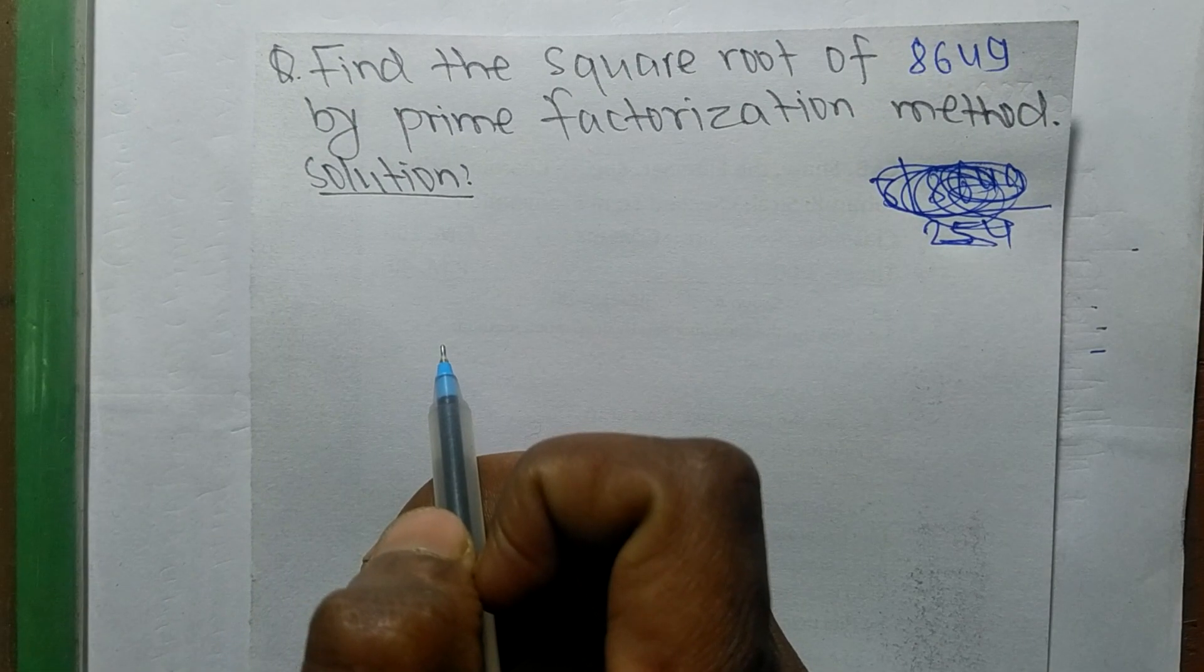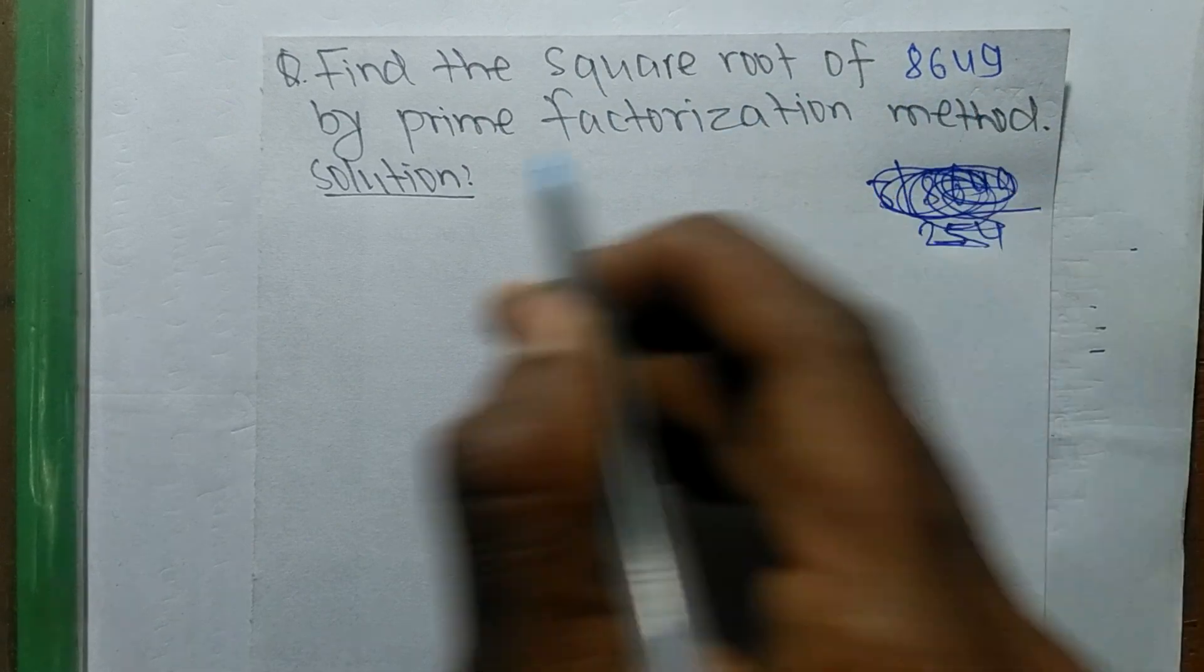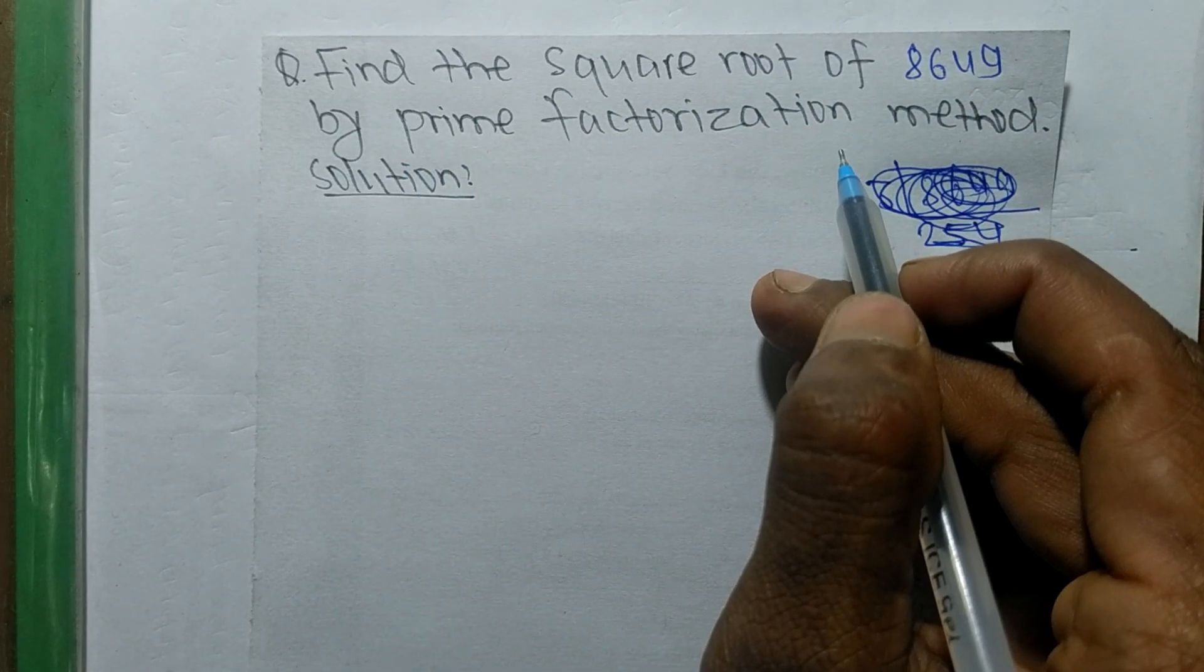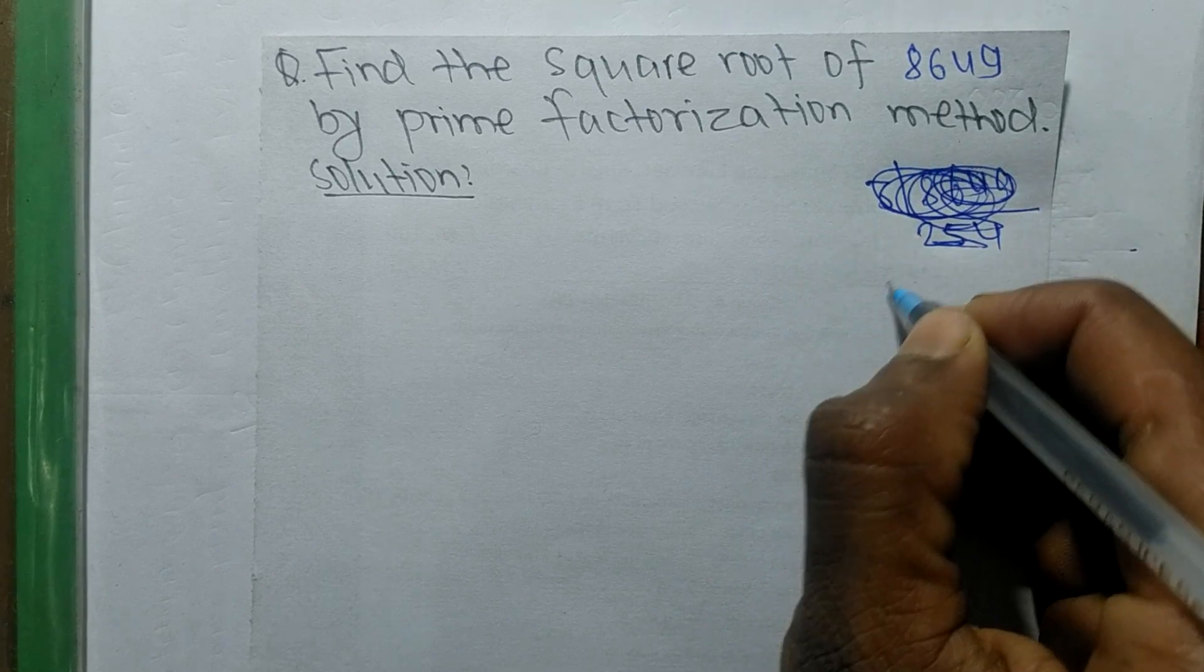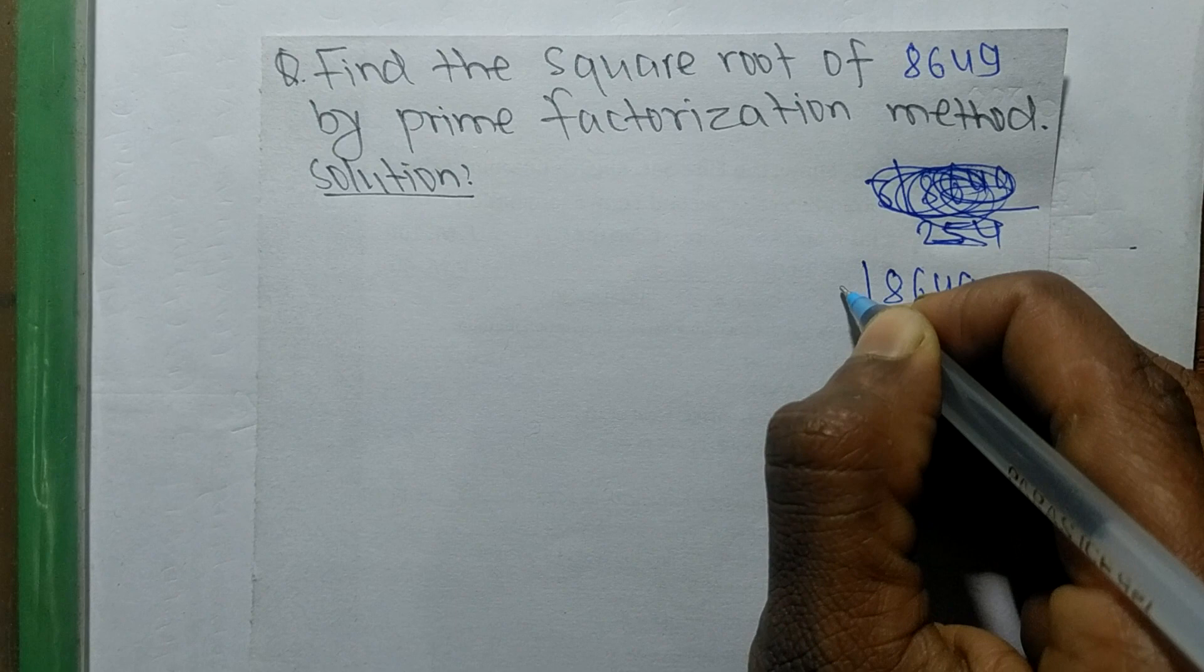So today in this video we shall learn to find the square root of 8649 by prime factorization method. First of all, we shall find out the prime factors of 8649.